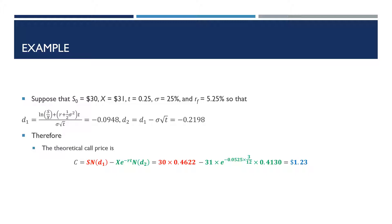So let's go over an example where we use the Black-Scholes option pricing model. Suppose we have a stock currently trading at $30 in the market, and we're looking at a call option where the strike price is $31 — so currently the call option is being issued out of the money. The time to maturity is a quarter of a year, our annualized standard deviation is 25%, and the annualized risk-free rate is 5.25%. So what we first need to do is calculate D1. D1 takes in the numerator the log of the stock price divided by the strike price, then we add on the risk-free rate plus half of the variance, and multiply all of that by the time to maturity. In the denominator we have the standard deviation multiplied by the root of the time to maturity.